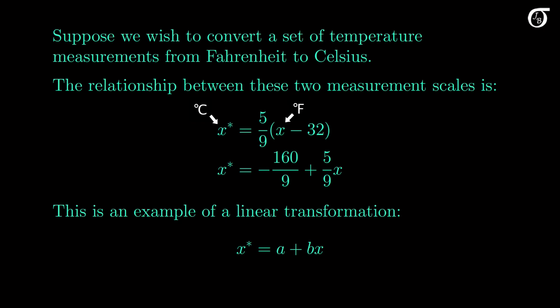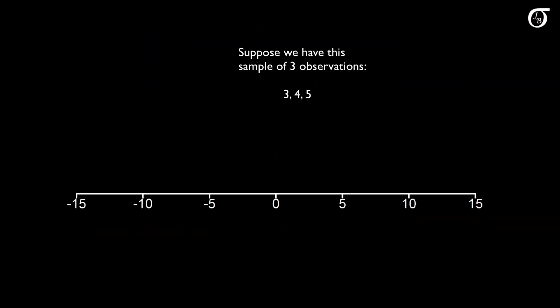One important concept is the effect of a linear transformation on the summary statistics. Let's see if we can visualize that before looking at a few formulas. Suppose we have a sample of three observations: 3, 4, and 5, represented by yellow dots on a number line. The mean is 4, and the sample standard deviation is 1 — the standard deviation of three consecutive integers. You can verify that for yourself with a calculator or software.